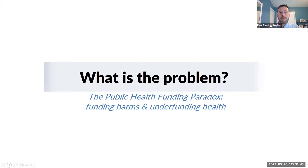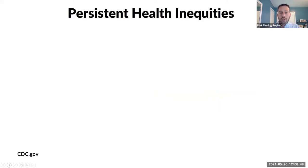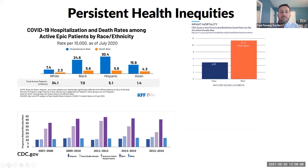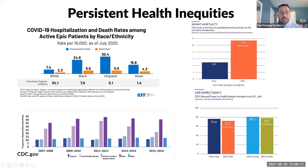We see persistent health inequities in this country. In COVID-19, maternal mortality, infant mortality, life expectancy — you can pretty much pick any health issue and we see these persistent health inequities. We are making a dent in some cases, but in other cases inequities are actually getting wider, and this is a persistent feature within our society.